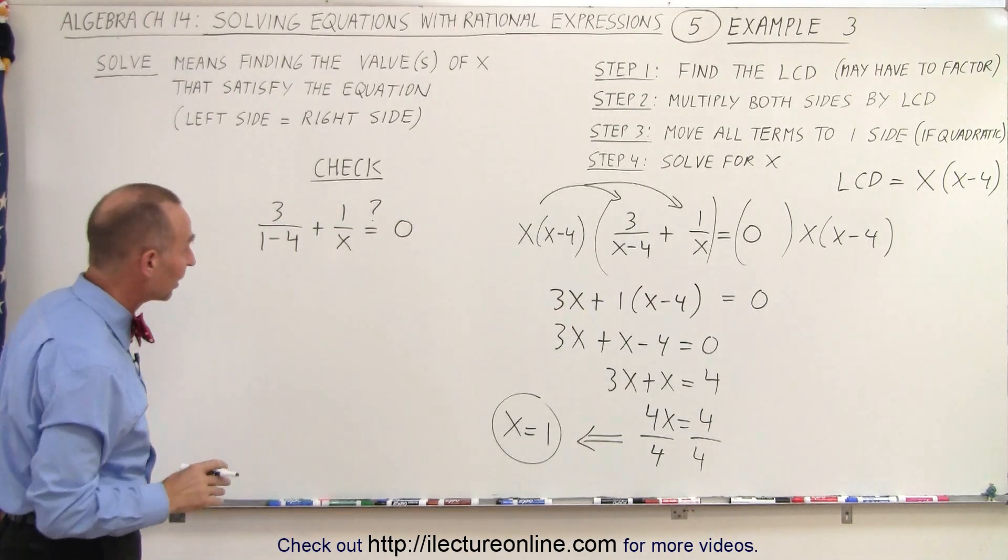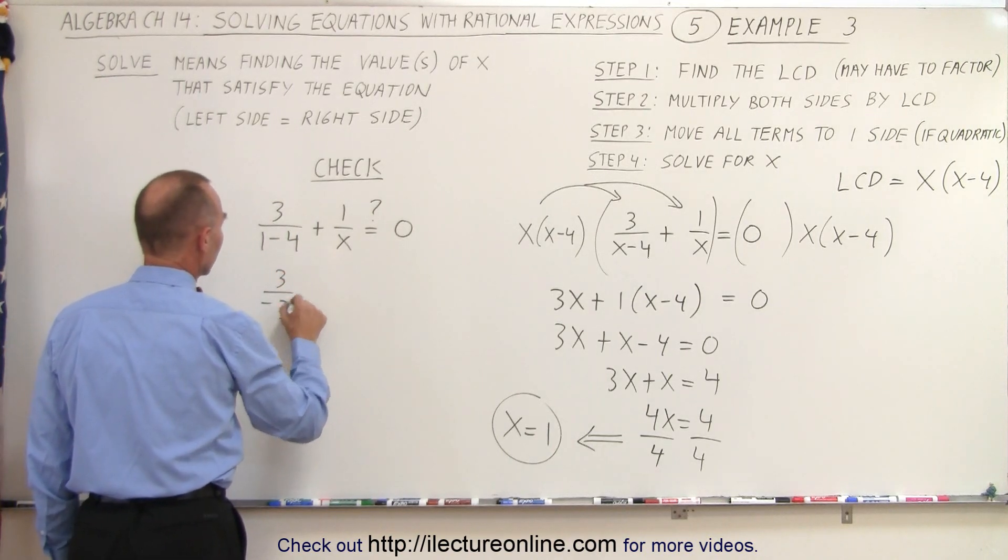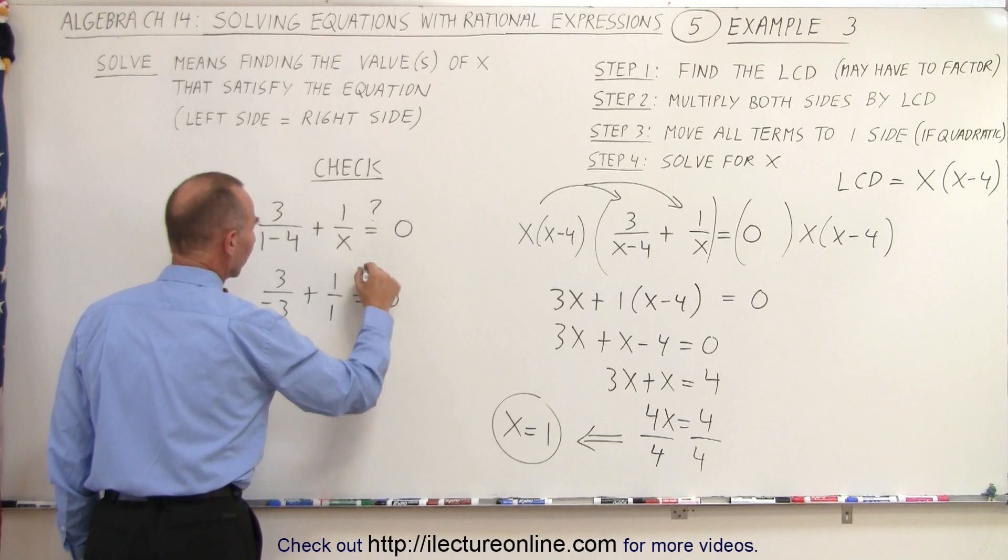Of course, we don't know if it is until we check. Simplifying this, we get 3 divided by minus 3 plus 1 over 1 equals 0. Again, we're going to check that.